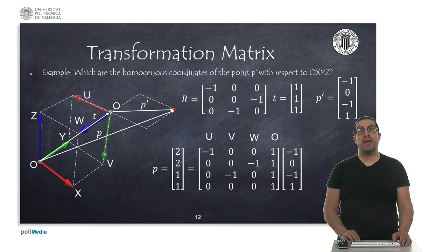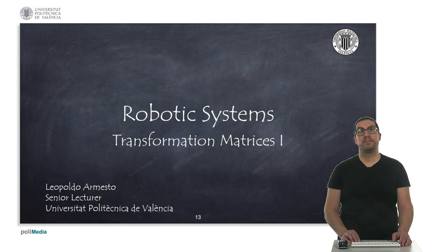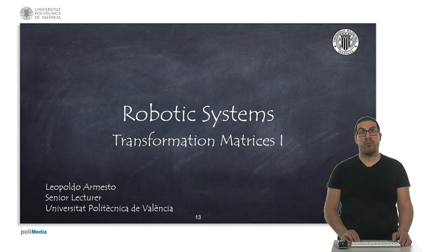To conclude this presentation, we see another example in which we have two reference frames: the fixed frame OXYZ and the mobile frame OUVW, which has been rotated and then moved. Based on this transformation, we can compute the coordinates of point P with respect to the fixed frame if we know the coordinates of point P' with respect to the mobile frame. In this video, we have introduced the concepts of homogeneous coordinates as well as homogeneous transformation matrices. In the following video, we will explain some basic operations that we can perform with this transformation matrix. Thank you very much.